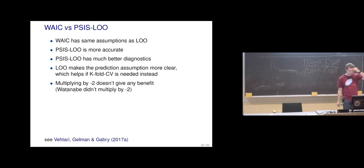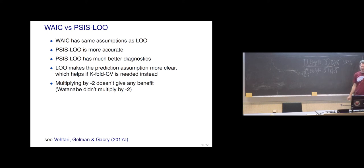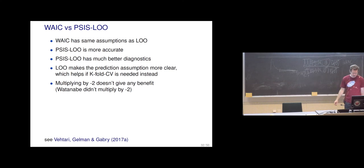There's also the strange thing that people keep multiplying by minus two. The LOO package and brms are also reporting something called LOO-IC. I hate that, but I can't get my collaborators to remove it, because there are so many scientific fields that are so used to information criteria. At least we get them to use PSIS-LOO if we call it LOO-IC. The multiplier of minus two had a historical reason, but otherwise it's not needed anymore.